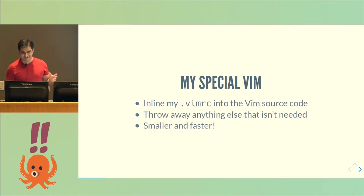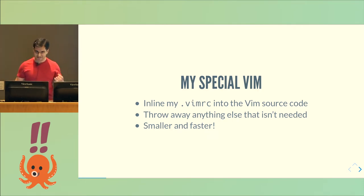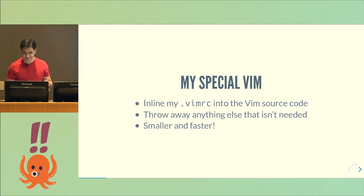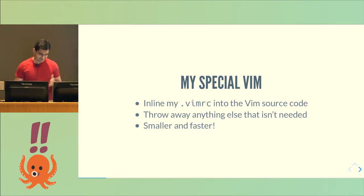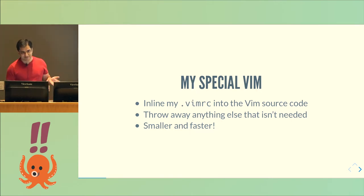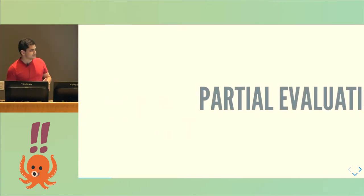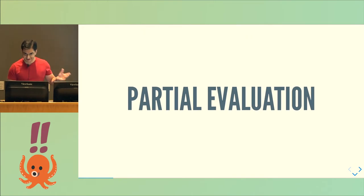At the end of this, I would have something that's both smaller because it doesn't have stuff I won't use, and faster because it doesn't have stuff I wouldn't use. The idea of doing this in general is called partial evaluation.